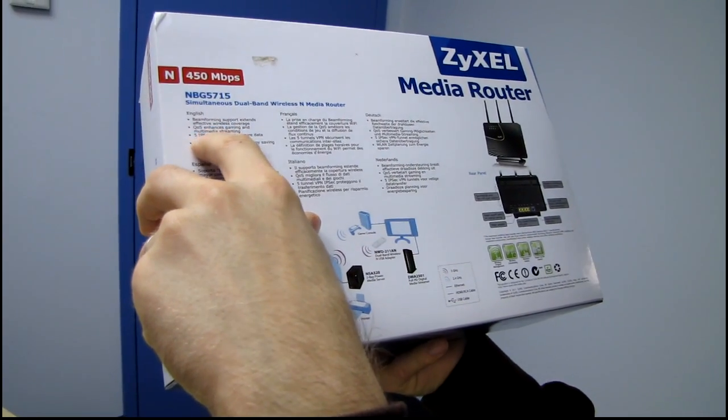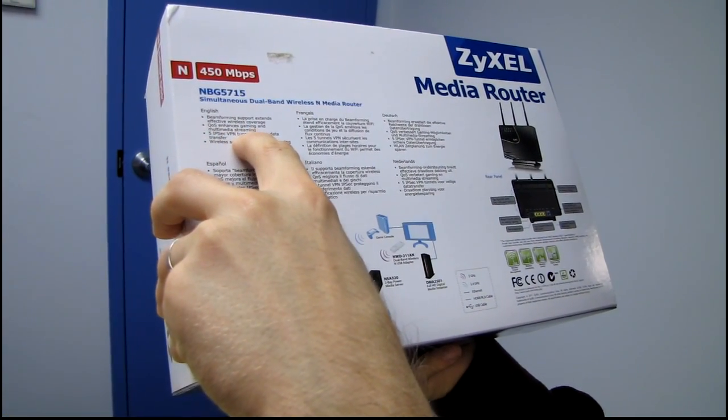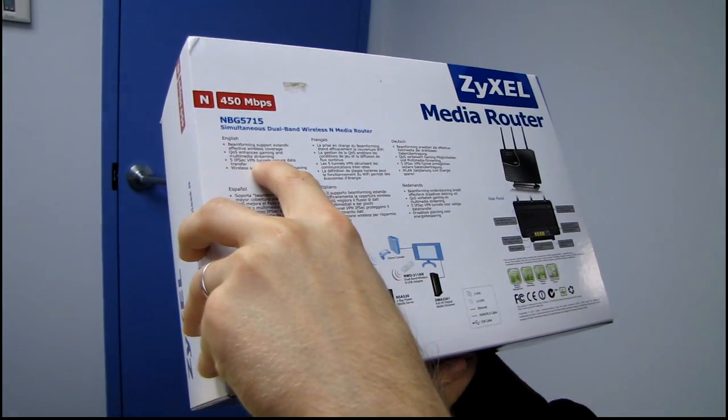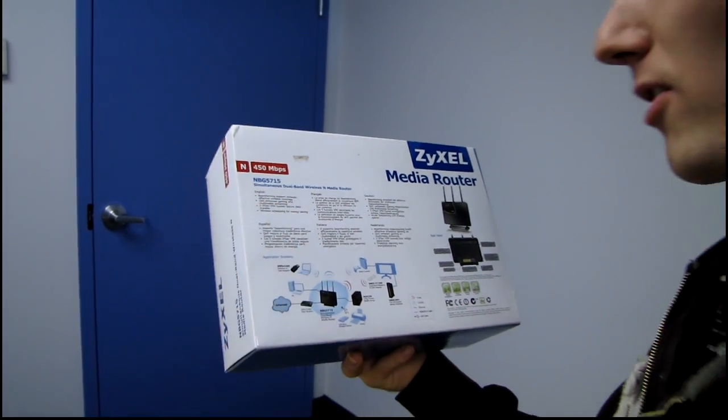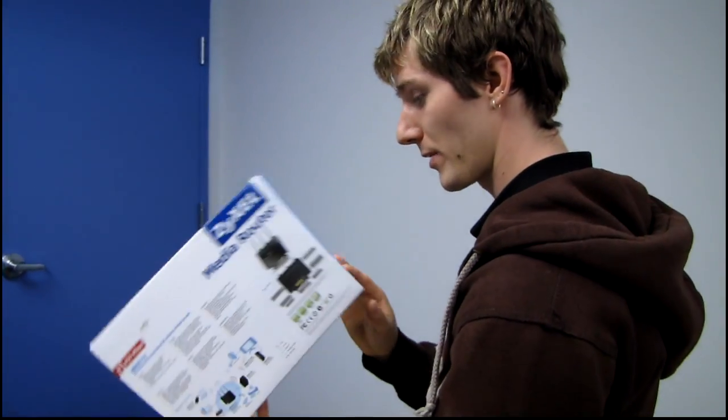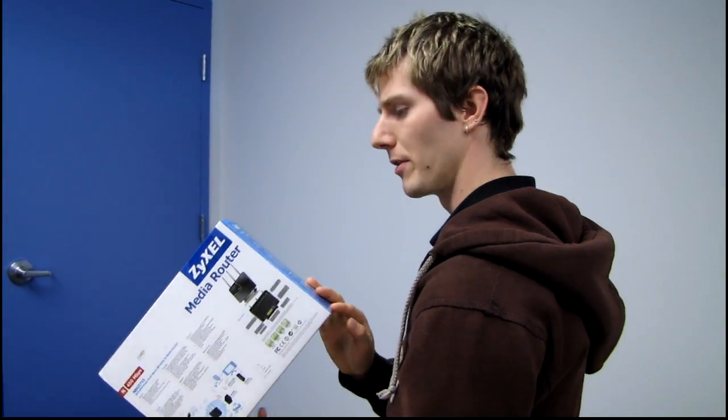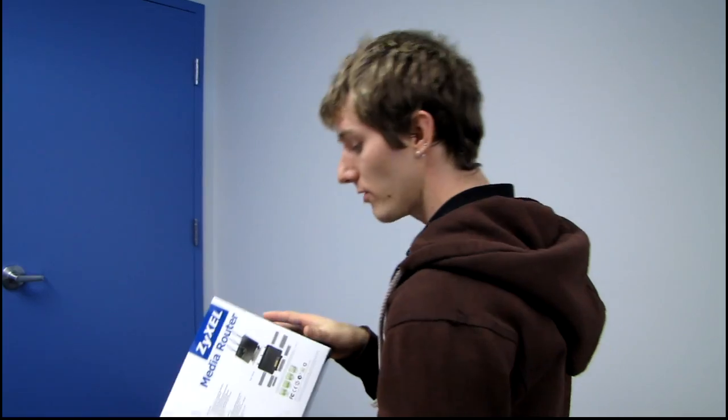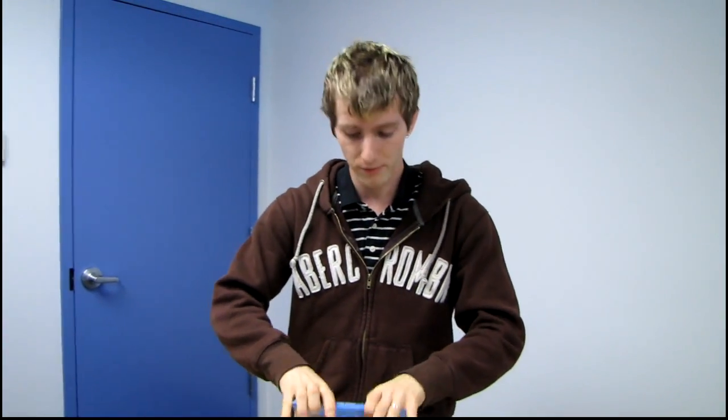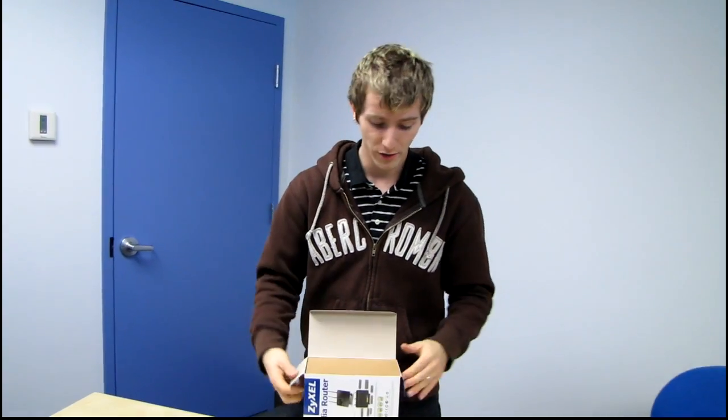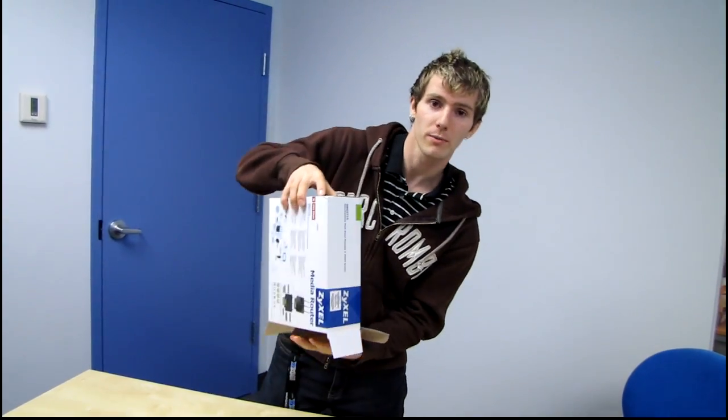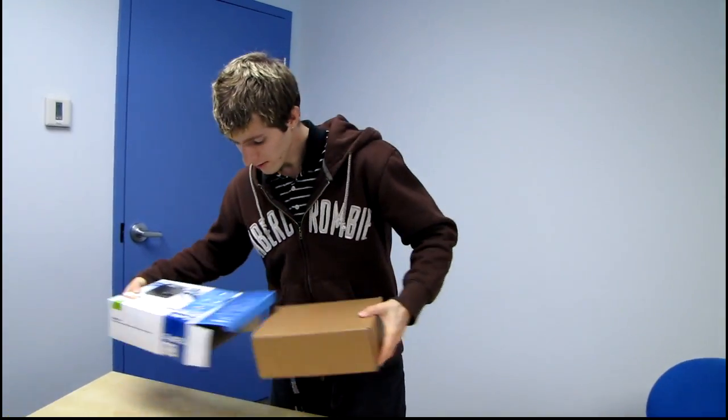Five IPSec VPN tunnels secure data transfer—that's something I haven't seen as a called-out spec on a consumer-level router ever. Wireless scheduling allows energy savings, so you can turn off your wireless when you're at home but sleeping, for example, or when you don't want your kids surfing the net at four in the morning.